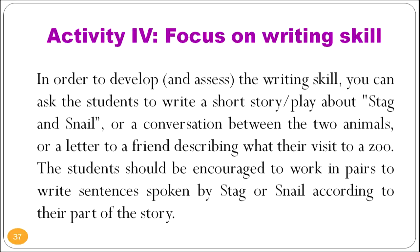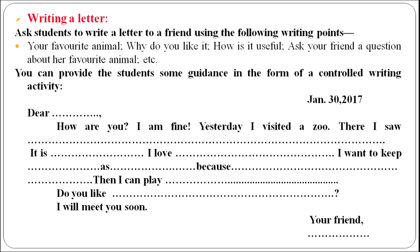Activity four focuses on writing skill. To develop and assess writing skill, you can ask students to write a short story or a play about the stag and snail, or a conversation between the two animals, or a letter to a friend describing what their visit to a zoo was like. Students should be encouraged to work in pairs to write sentences spoken by the stag or snail according to their part of the story. You can also ask them to write a letter to a friend covering: your favorite animal, why you like it, how it is useful, and a question about your friend's favorite animal.